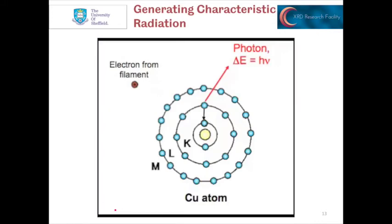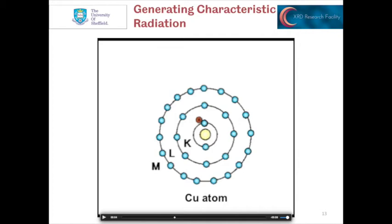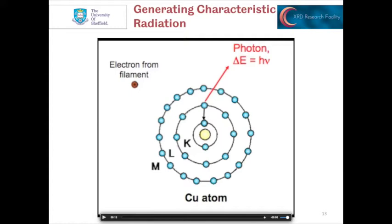We can view this in this short animation, where we have an electron from the filament impacting with an atom in the metal target, causing a core electron to be ejected. This leaves an unstable configuration with a hole present in one of the core shells. An electron then transfers down — in this case from the L shell to the K shell — to fill this core hole and stabilize the atom. In doing so, it releases a photon where delta E equals h times the frequency. For many metal atoms, this energy is in the range of X-radiation.